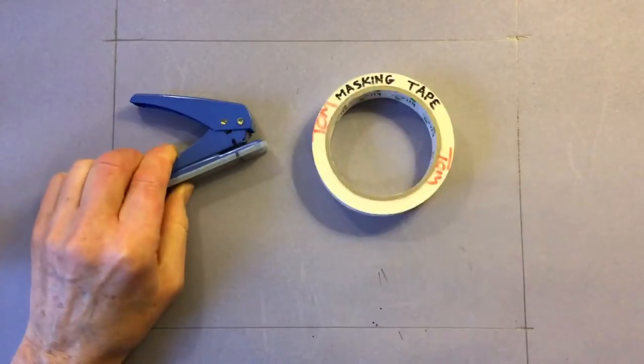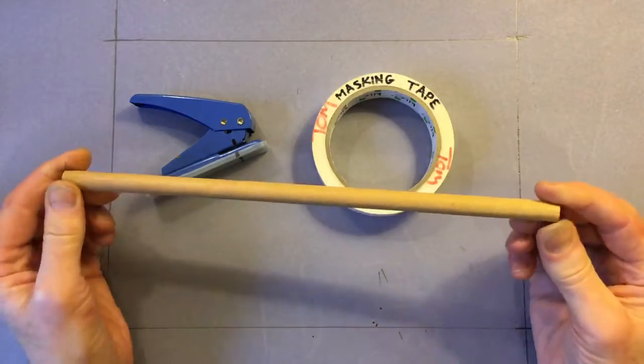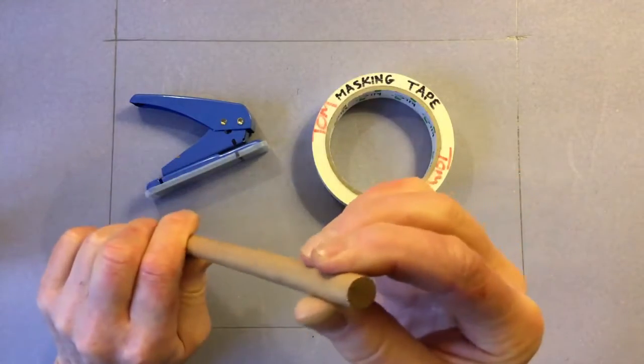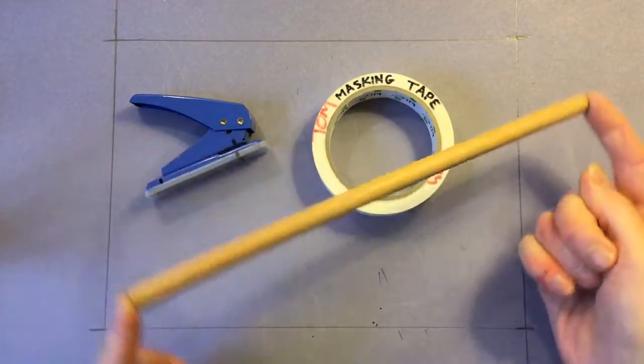Some masking tape, a rolling rod and that's about a 12 millimeter or half inch, approximately half inch rolling rod dowel and that's about 30 centimeters long.